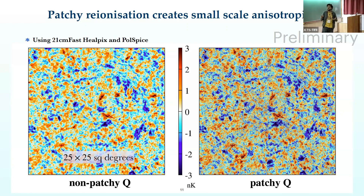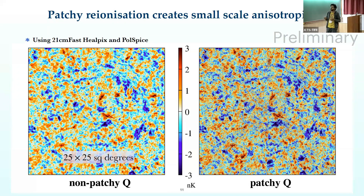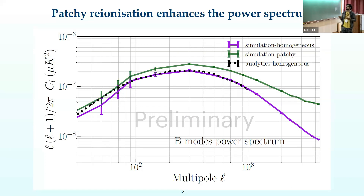Initially we considered a homogeneous model of reionization, but we wanted something more realistic — a patchy model with real, non-Gaussian density fields. We moved to simulations, using 21cmFAST and HEALPix to make sky maps. On the left you can see the Q Stokes parameter for the non-patchy case and on the right for the patchy case. We compared our analytic prediction for the homogeneous model against the simulation, and it matches well within cosmic variance error.